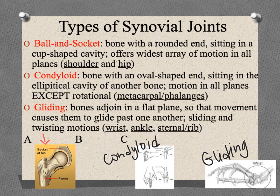The next type is the condyloid joint, where one bone has an oval-shaped end — similar to a ball-and-socket but less pronounced — sitting in a cavity-shaped end of another bone. It allows for good motion but doesn't rotate all the way around like the ball-and-socket. We find these at the joint between the hand and the fingers: you can point your finger up or down toward your palm or side to side, but it can't fully swivel like your shoulder or hip.